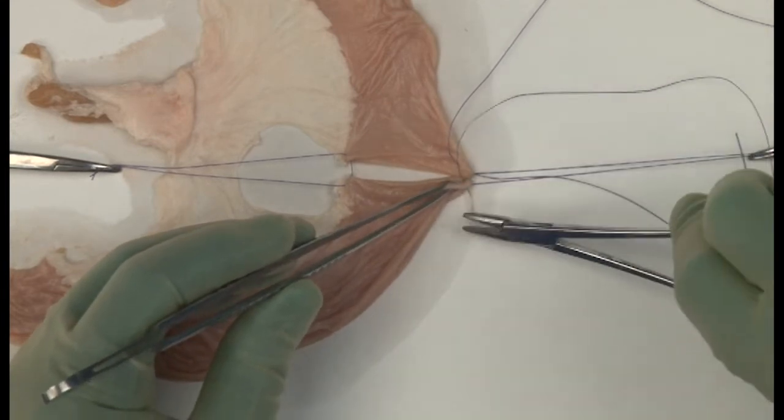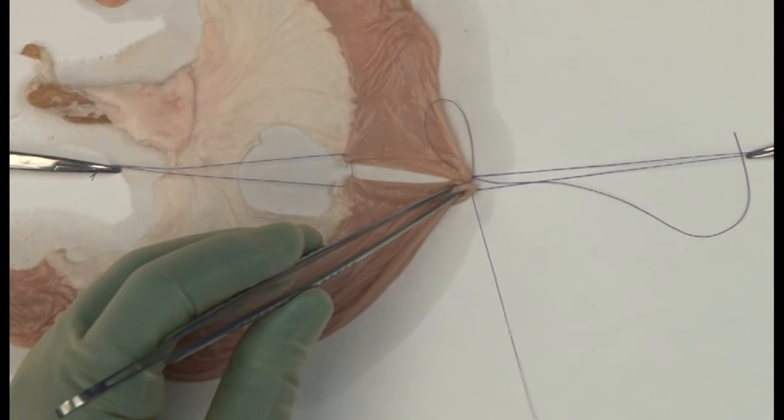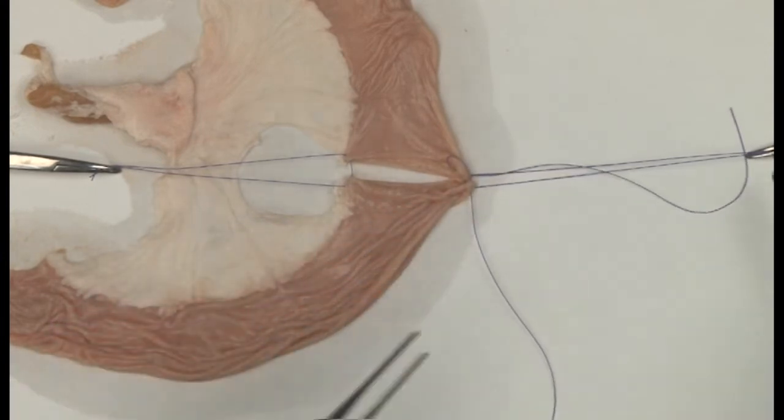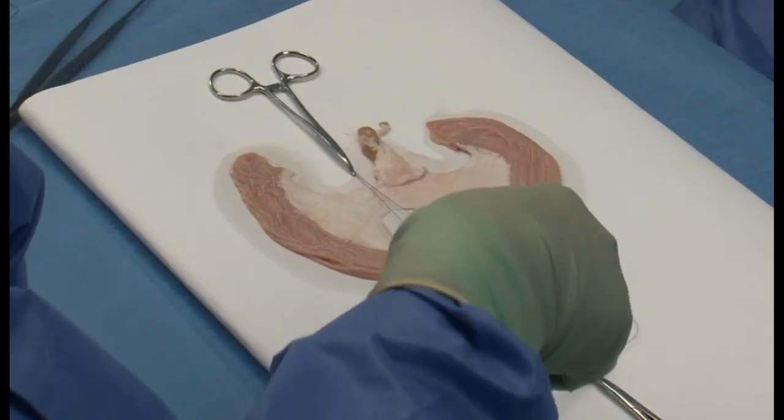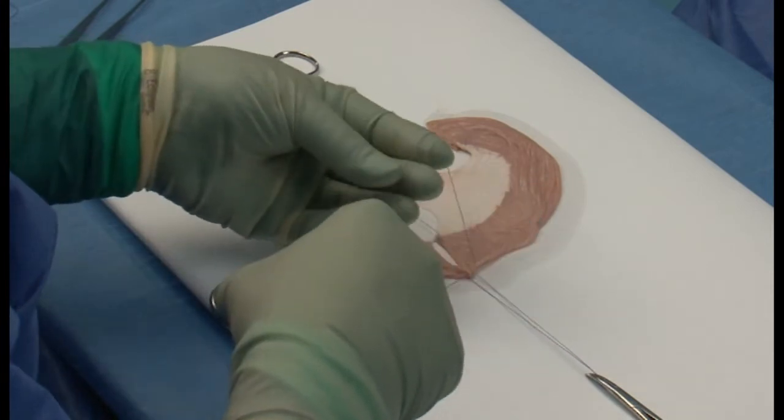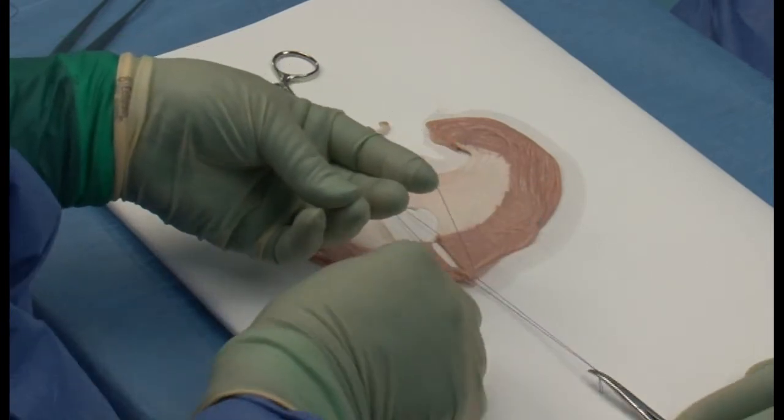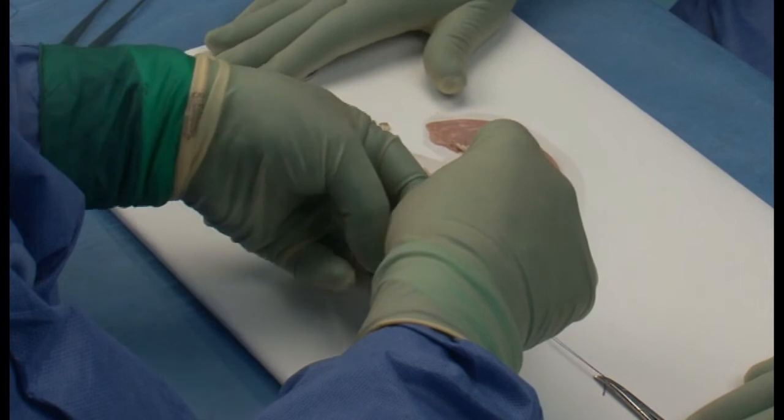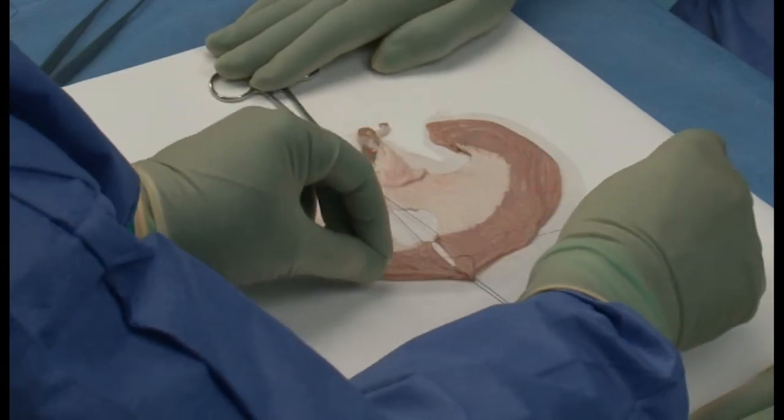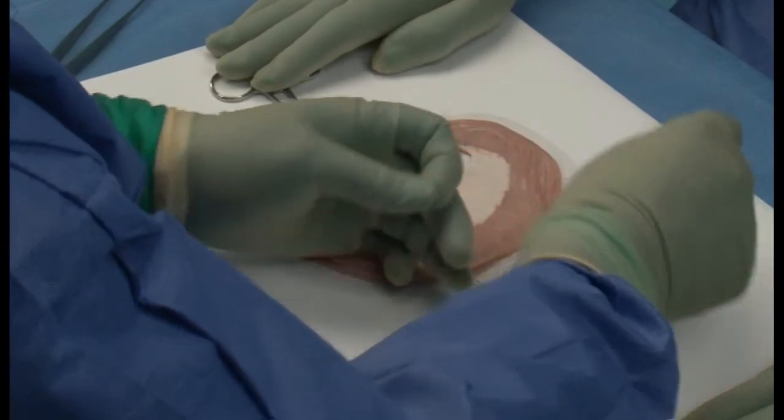We will start again at the anti-mesenteric border, and insert a suture approximately 5 mm from our original stay suture. Do not tie the knots too tightly, as this could cause strangulation of the tissues, and yet not so loose as to allow the potential for leakage.